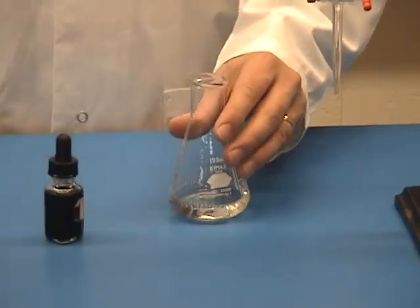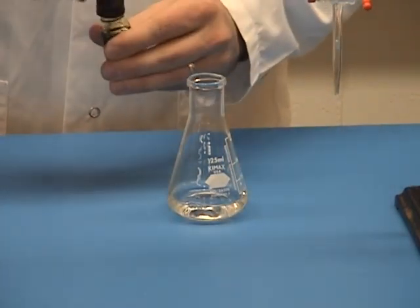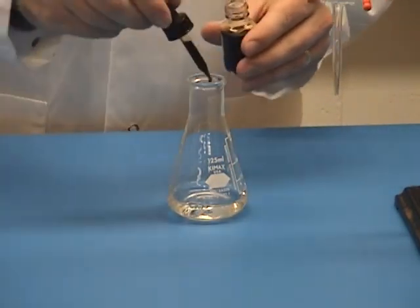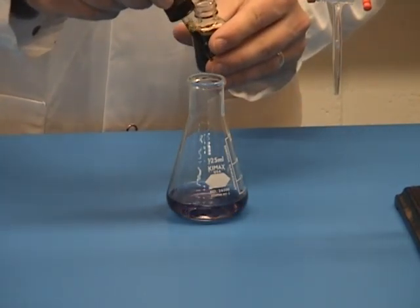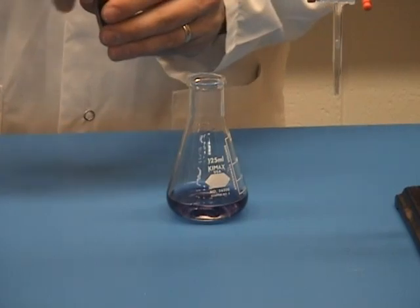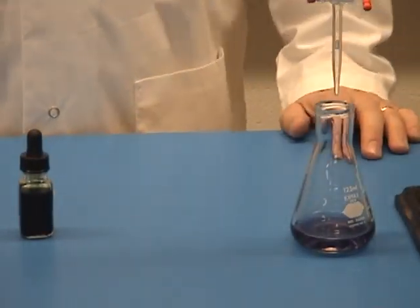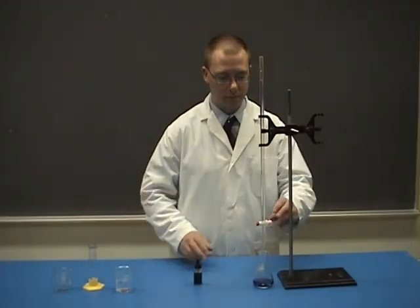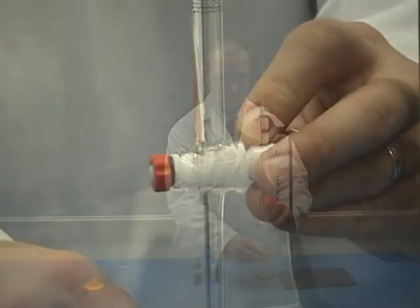Add universal indicator to the NaOH. Universal indicator has a unique property. It will turn one color for an acid, pH less than 7, another for a base, a pH of more than 7, and yet another for a neutral solution, a pH of exactly 7. We will have to observe the change in color carefully in order to determine when the base is neutralized.